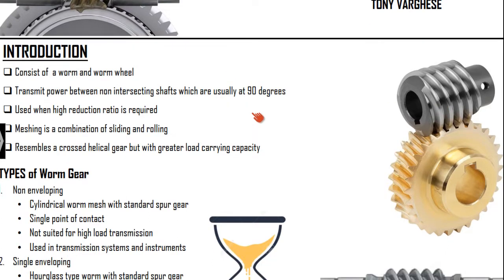The basic introductory part consists of a worm and a gear. Where are we going to use this? The main answer is that when we want a velocity reduction ratio greater than 10, we cannot go for any kind of gears learned previously. In that case, the only option is the worm and worm wheel. Worm wheels are mainly used for higher velocity ratios or power transmission ratios more than 10. It is also used to connect non-intersecting shafts which are usually at 90 degrees.